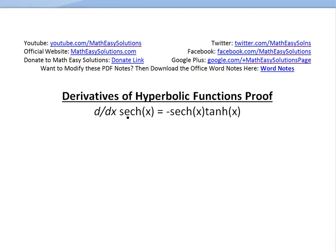derivative of hyperbolic secant of x and prove that it equals negative hyperbolic secant of x times hyperbolic tangent of x.